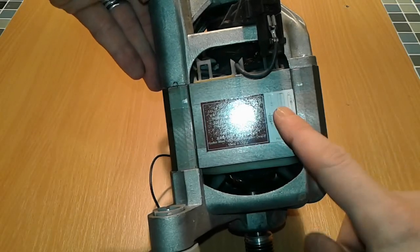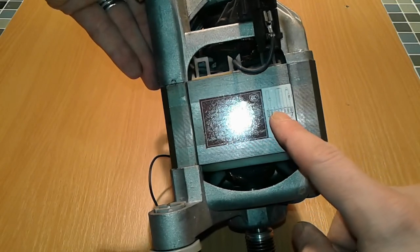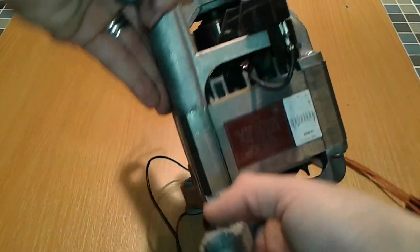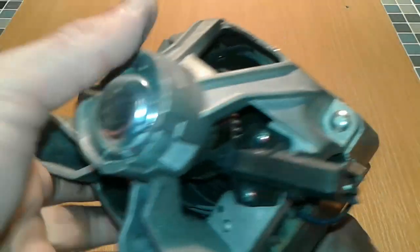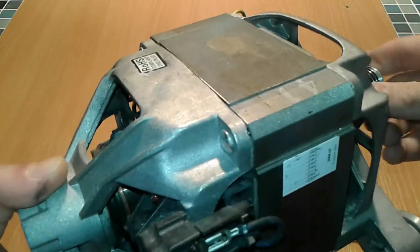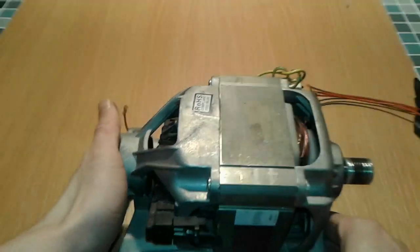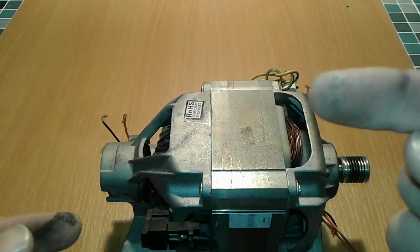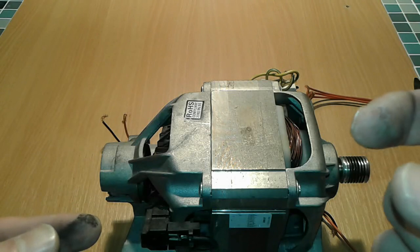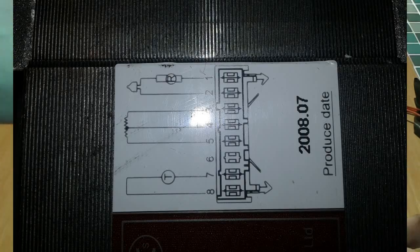It's got two brushes, the tachometer coil, the stator, and the rotor. As you can see in this diagram here, we're gonna bridge one of the coils to connect with one of the brushes.